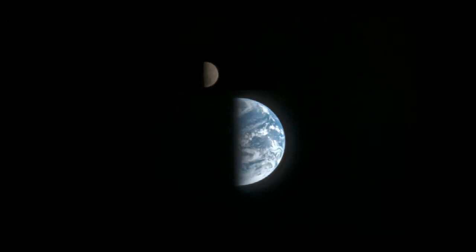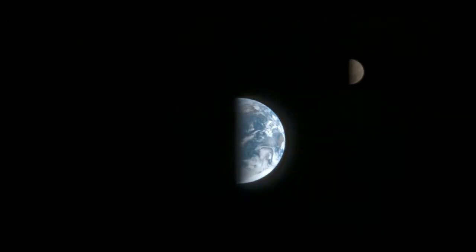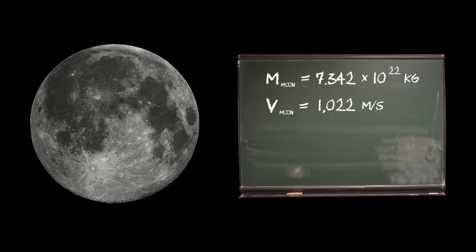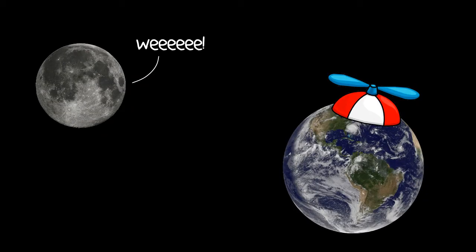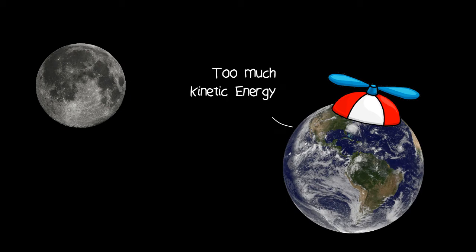You see, a body the size of the Moon just swanning around the universe would have a tremendous amount of kinetic energy, too much for the Earth's gravitational field alone to dissipate, meaning it would be impossible for a hurtling Moon to be slowed down enough to fall into a stable orbit around us.